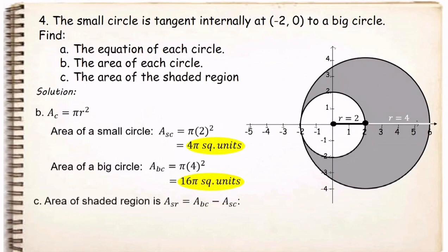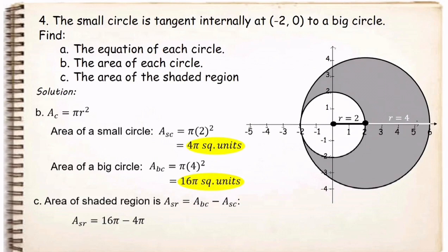For letter C, to find the area of the shaded region, we use the formula: area of shaded region = area of big circle minus area of small circle. Since the area of the big circle is 16π and the area of the small circle is 4π, we do the subtraction: 16π − 4π = 12π square units.